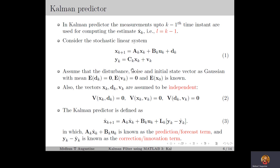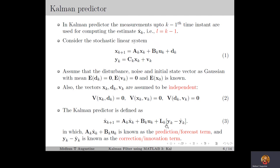We assume that the disturbance, noise, and initial state vector are Gaussian vectors. This means E of wk equals 0, E of vk equals 0, and E of x0 can be non-zero but is assumed to be known. The vectors xk, dk, and vk are assumed to be independent, meaning their cross-covariance matrices are all zero matrices. The Kalman predictor is defined as in equation 3, which is similar to the Luenberger observer but with a time-varying gain Lk. The first term is known as the prediction or forecast term, based on model-based prediction, and the second term is the correction or innovation term, based on sensor-based correction.